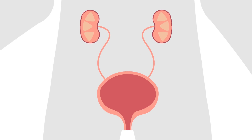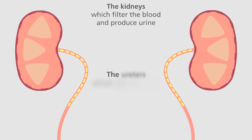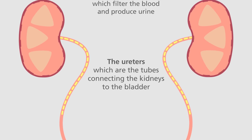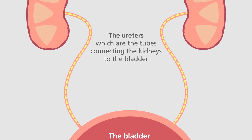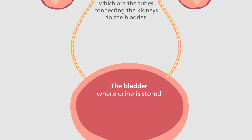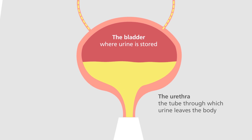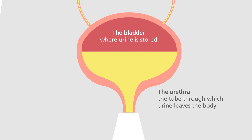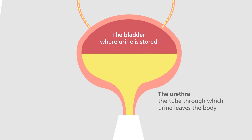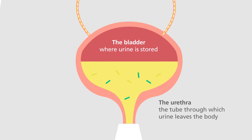The urinary tract consists of the kidneys, which filter the blood and produce urine, the ureters, which are the tubes connecting the kidneys to the bladder where the urine is stored, and the urethra, which is the tube through which urine leaves the body. Bacteria normally live in the bowel and on the skin, but can enter the bladder by travelling up the urethra, where they can grow and multiply and may cause symptoms of an infection.